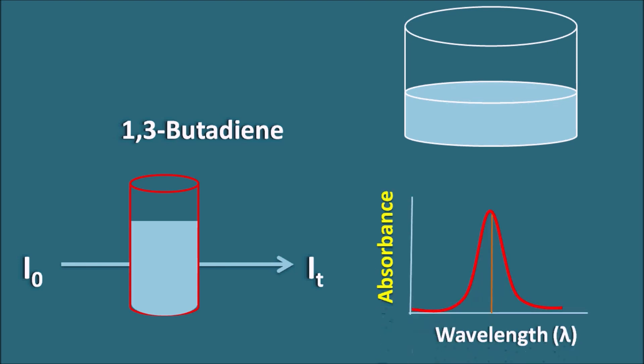If we plot absorbance versus wavelength, we can get a curve and observe a maximum absorbance at a particular wavelength — this wavelength is called lambda max. Lambda max is the wavelength at which the sample shows maximum absorption. Sometimes this lambda max may shift to either higher or lower values because of structural changes in the compound or other factors like the solvent. These changes in lambda max are what we call spectral shifts.